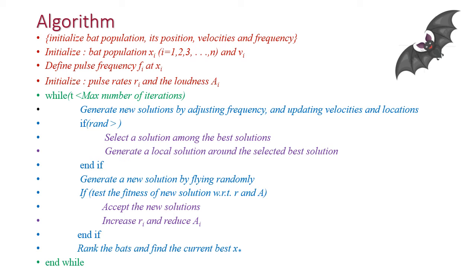Select a solution among the best solutions. Generate a local solution around the selected best solution, then generate a new solution by flying randomly. Test the fitness of that solution. If the fitness is accepted, accept the new solution, increase the pulse rate and loudness, and rank the bats and find the current best position. Repeat this algorithm until it reaches the end stop criterion or reaches the best solution.